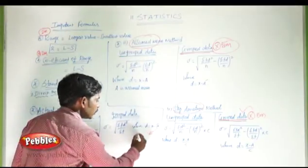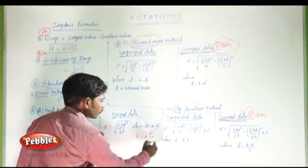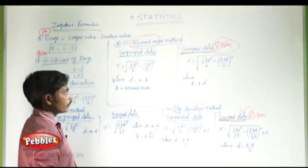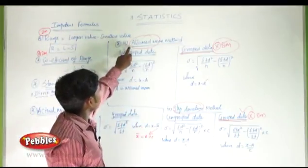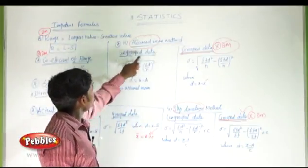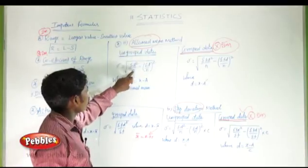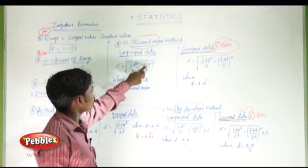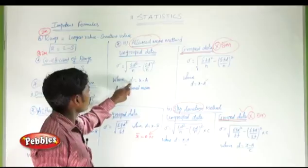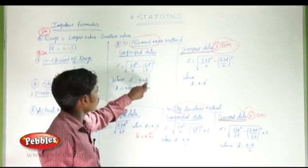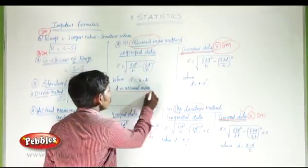Where x̄ is the arithmetic mean. For the assumed mean method with ungrouped data: standard deviation = √(σd² / n − (σd / n)²), where d = x − a, and a is the assumed mean.